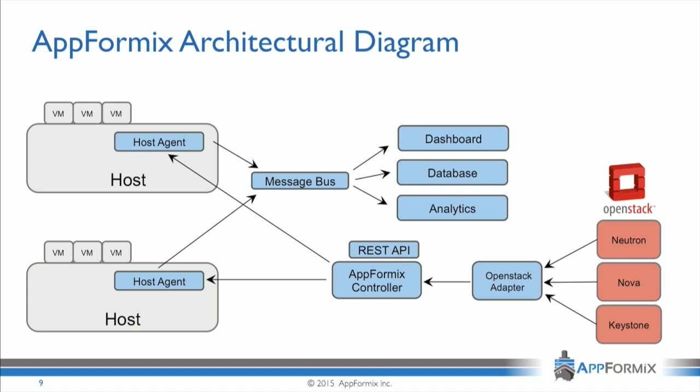From there, we discover — we talk to Keystone and Nova. The reason we talk to Keystone is so that we don't have to do identity management; we use the same identities you're already using in your OpenStack infrastructure. We talk to Nova to find out who all the compute hosts are and what all the instances are. Once we find those hosts, we actually deploy the agent.